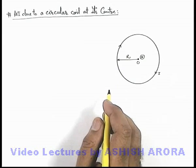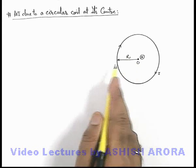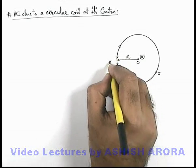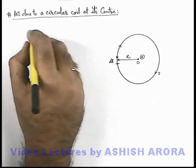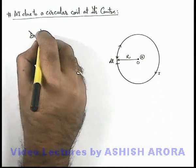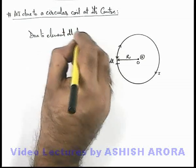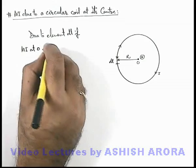To find out the magnetic induction at point O, the center of this coil, I use Biot-Savart's law. I consider an element of length dl on this coil, and due to element dl, if magnetic induction at O is dB...